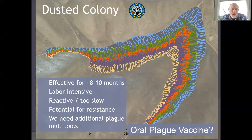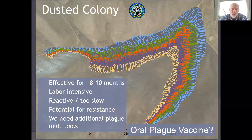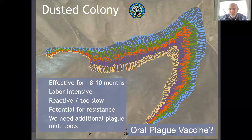To wrap up the dusting section: dust distributed properly is effective for eight to ten months, which leaves us exposed for two to four months on these colonies. It's labor intensive to visit all the burrows. Often folks will wait until they have a plague-infected carcass or noticeable mortality before dusting, and that reactive step is frequently too slow — plague has already decimated the population by the time you've mobilized to dust. There's also always the potential for resistance to the insecticide. So it was clear we needed additional plague management tools, which really lit the fire under the idea of a vaccine.